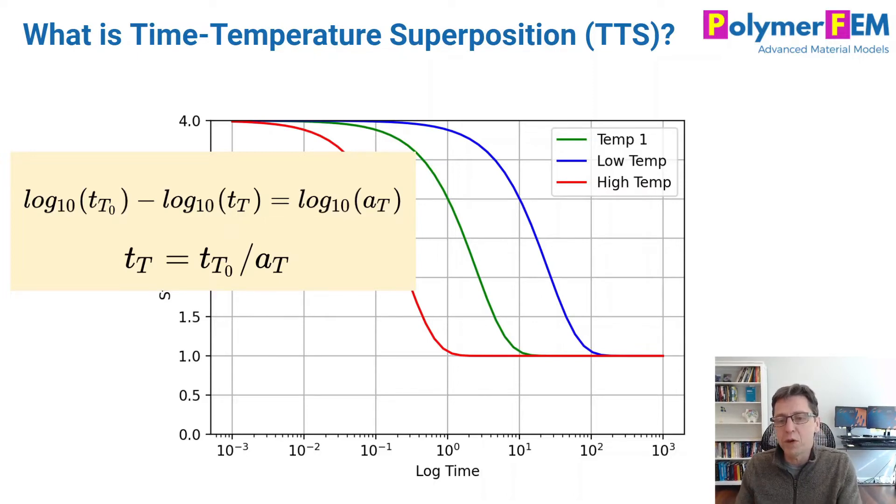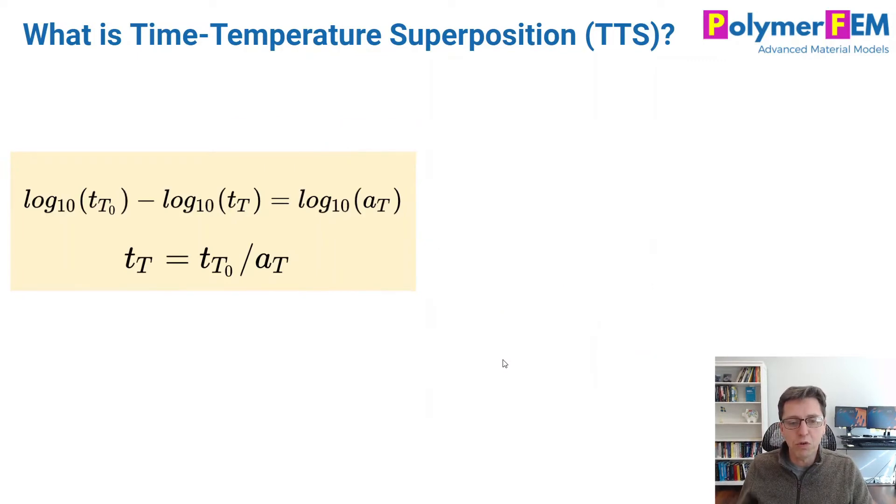So at the high temperature, time will go faster. At low temperature, time will go slower. This is directly from this experimental observation, if it applies, of time temperature superposition.